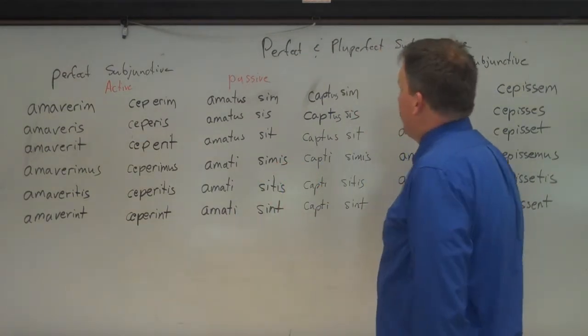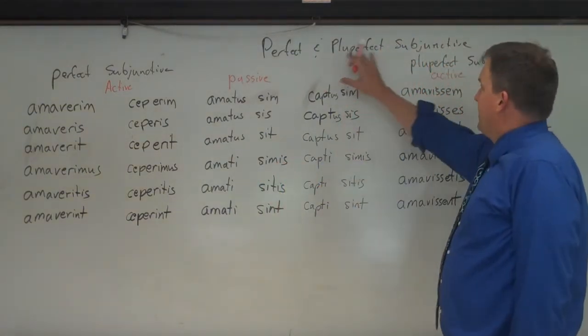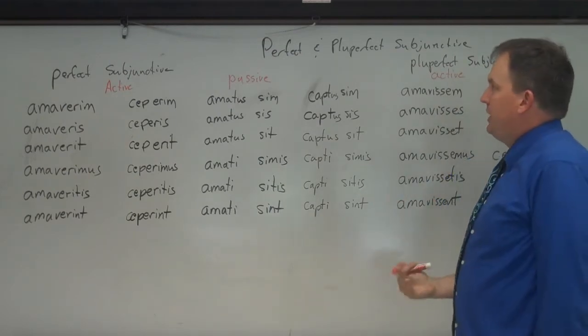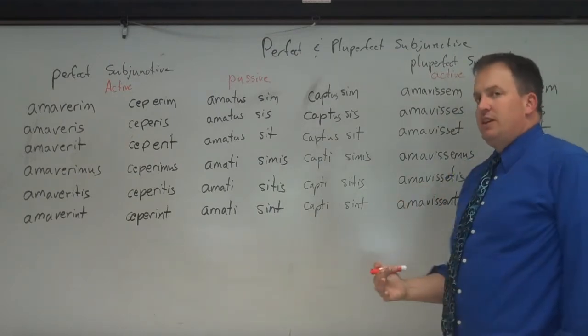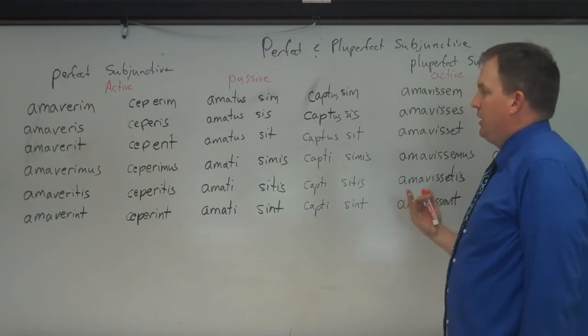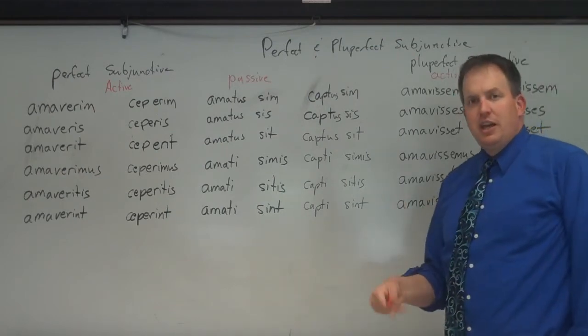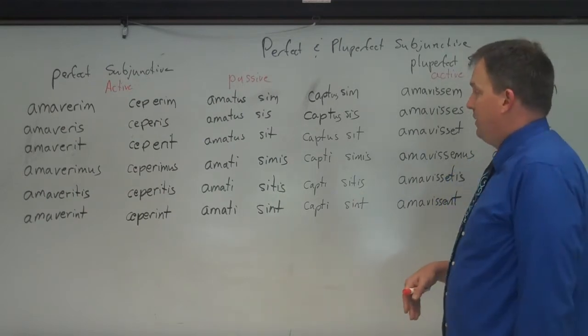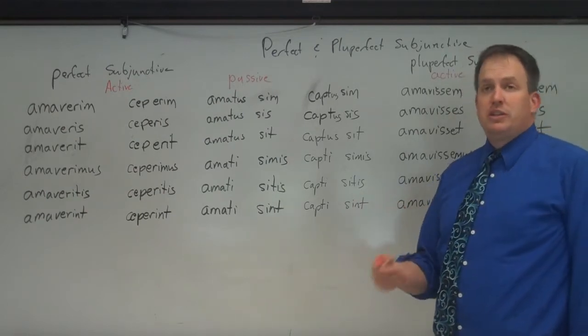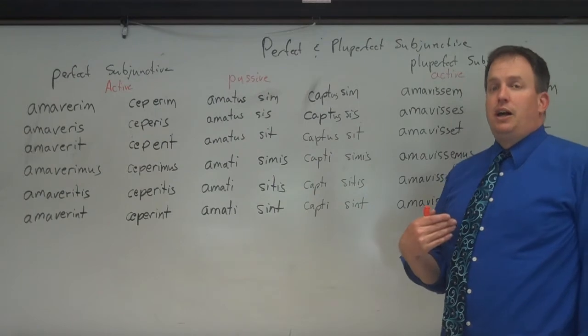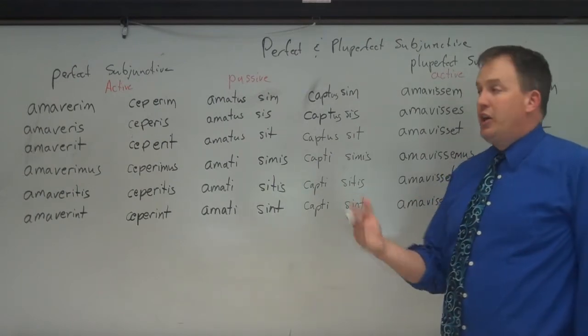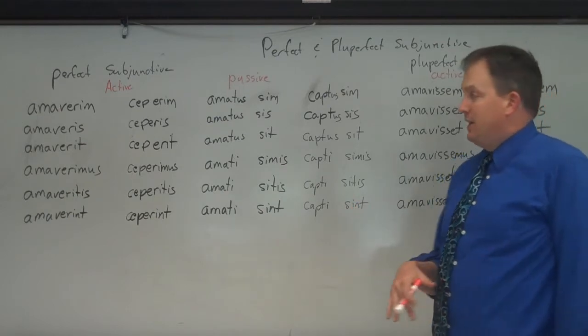Solvete omnes. Today we're looking at the perfect and pluperfect subjunctive. Now remember, the subjunctive mood is used in place of the indicative, especially in subordinate clauses, as well as to show conditionals we'll see later on, and also volative, hortatory, potential type constructions, even a thing called an optative, a wishing, would that this be so.